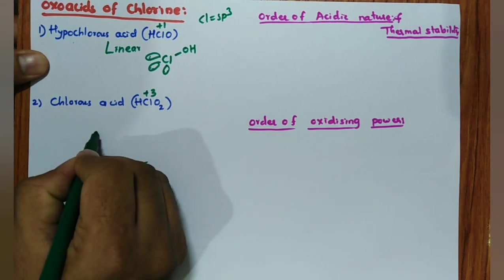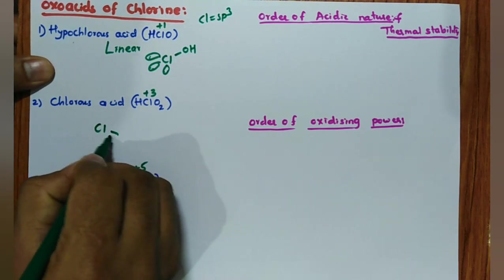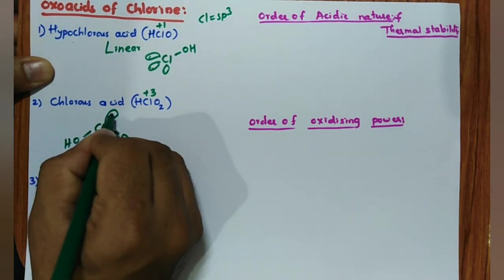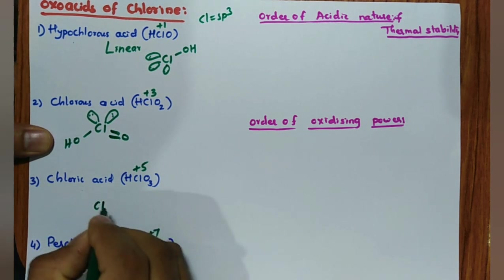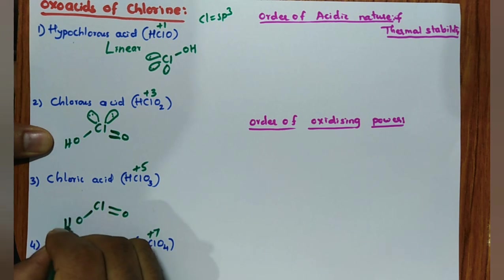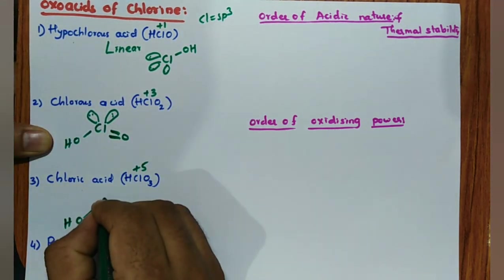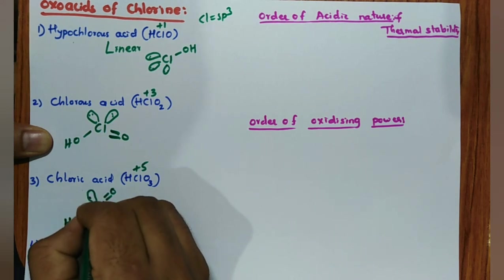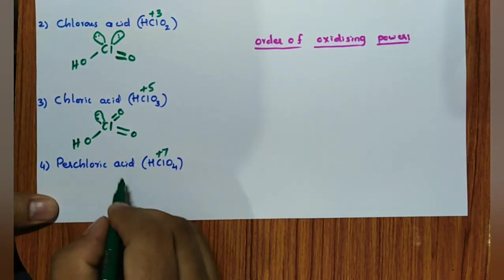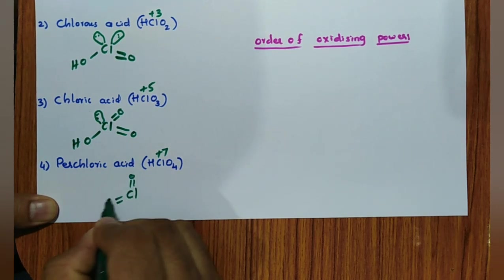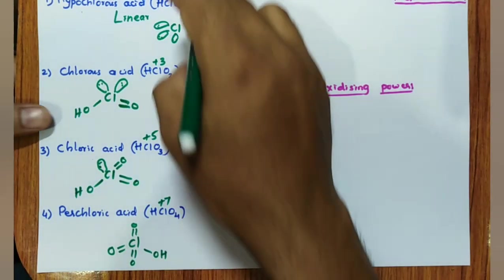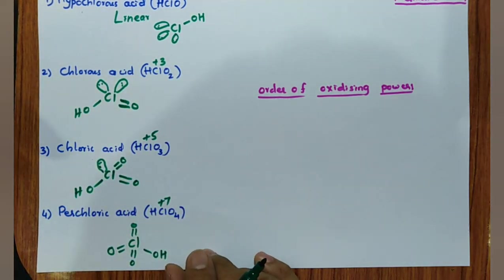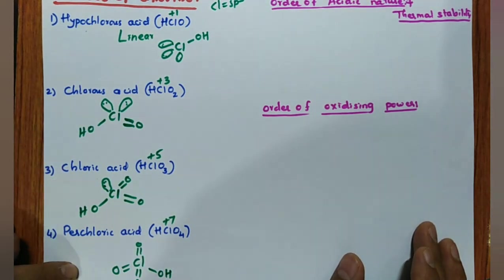Chlorous acid (HClO₂) structure: Cl=O, O, O–H — V-shape with two lone pairs on Cl (the central element is Cl, not oxygen). In each step going from HClO to HClO₄, one lone pair of electrons on Cl is replaced by a P=O double bond. Perchloric acid HClO₄: Cl=O three times and O–H, no lone pair. Lone pairs on Cl: HClO → 3, HClO₂ → 2, HClO₃ → 1, HClO₄ → 0. All these are monobasic acids because one O–H is present.